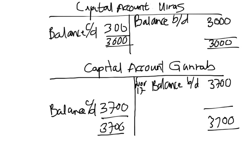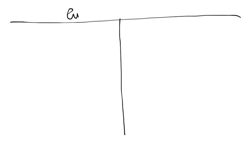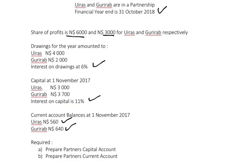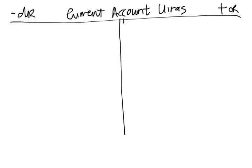Now we prepare the partner's current account, starting with Uiras. The current account is also an equity account, so it increases on the credit side and decreases on the debit side. The opening balance — balance brought down on 1st November 2017 — is $560 for Uiras.